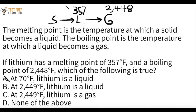For B, at 2,449°F lithium is a liquid — but 2,449 is higher than the boiling point of 2,448°F. At the boiling point, lithium becomes a gas, so any temperature above 2,448°F means lithium is a gas, not a liquid. For C, at 2,449°F lithium is a gas because it boils at 2,448°F — 2,449 is higher than 2,448, so lithium will be a gas. C is correct.